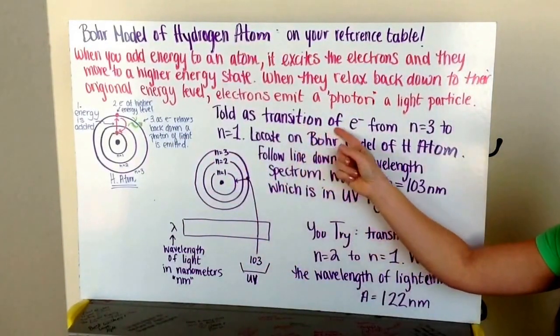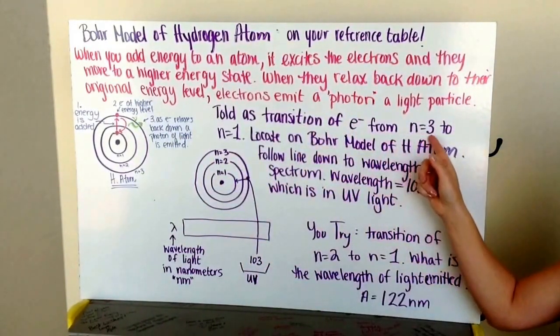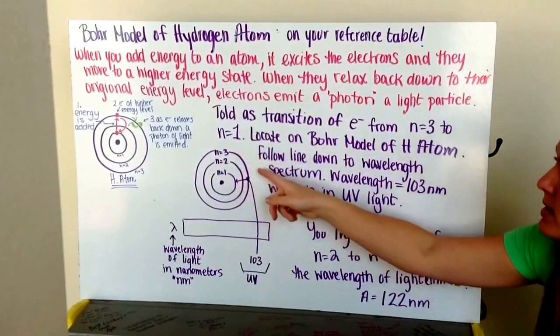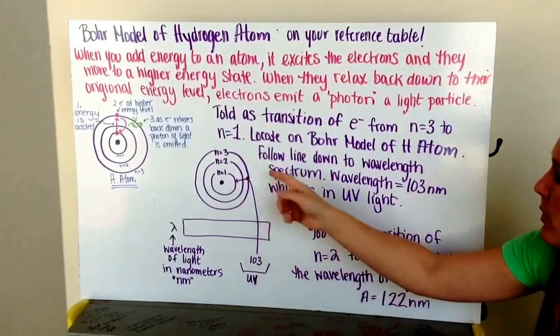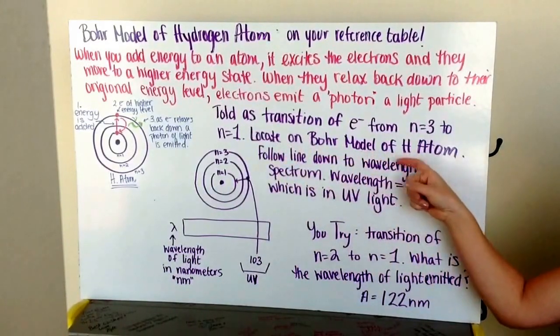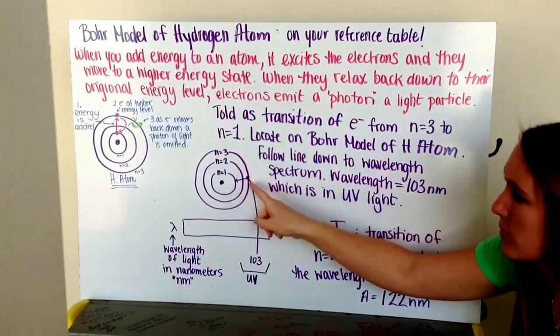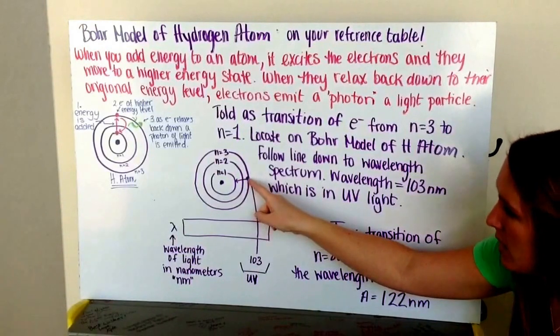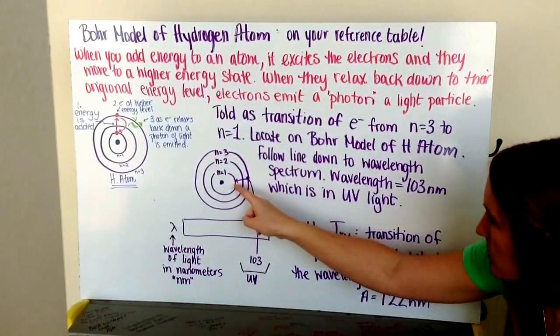There's a transition of the electron from n equals three to n equals one, where this is the ring that you have. So we locate it on the Bohr model of the hydrogen atom of n equals three, so we find our dotted n equals three, transitioning back down to n equals one.